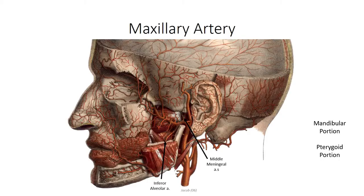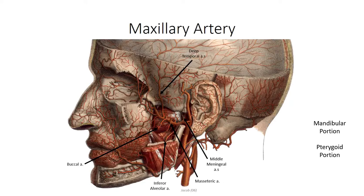The second segment of the maxillary artery is referred to as the pterygoid portion. This is the part of the artery that runs anterior and superior towards the pterygopalatine fossa. It contains a number of muscular branches that supply the muscles of mastication, including the masseteric artery and deep temporal branches that supply the temporalis muscle. The buccal artery also arises in this region, supplying the internal mucosa of the cheek and buccinator muscle.